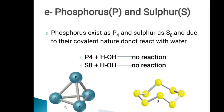The next elements of period 3 are phosphorus and sulfur. Phosphorus exists as P4 molecule and sulfur exists in a ring structure as S8. Both are covalent in nature and therefore do not react with water. If we react phosphorus or sulfur with water, it will give no reaction. You can see the P4 structure of phosphorus and the S8 ring structure of sulfur — both are covalent molecules.